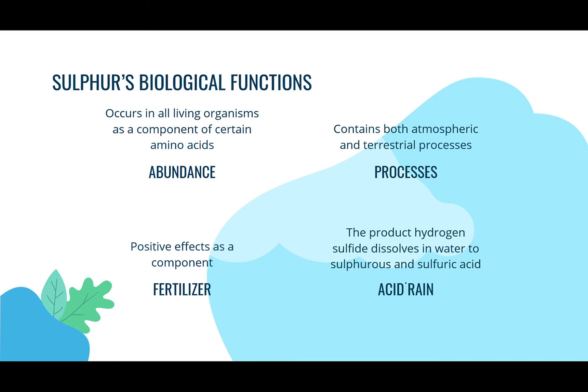Sulfur occurs in abundance in all living organisms as a component of certain amino acids, making it an integral part of carbon-based life. It's contained in both atmospheric and terrestrial processes. It can also be used as a fertilizer with positive effects. Additionally, it is a component of acid rain — a mixture of wet and dry material from the atmosphere containing higher than normal amounts of nitric and sulfuric acid, which is the product when hydrogen sulfate dissolves in water to form sulfuric acid.